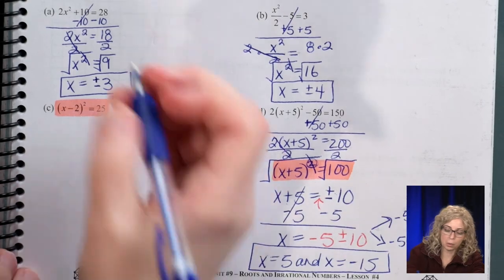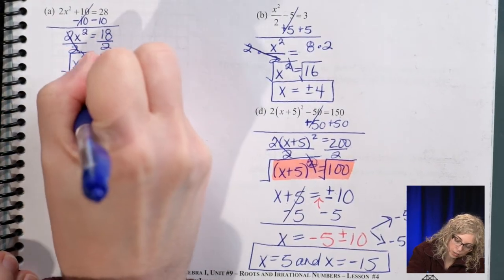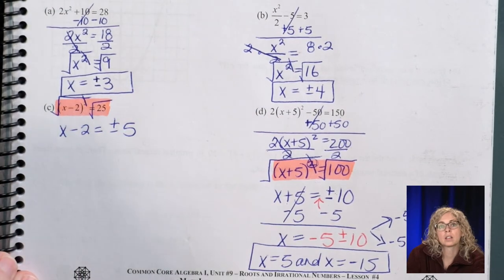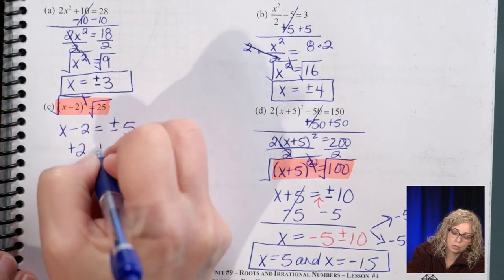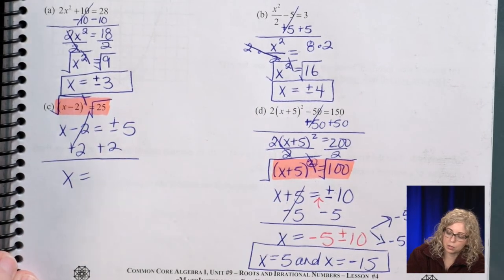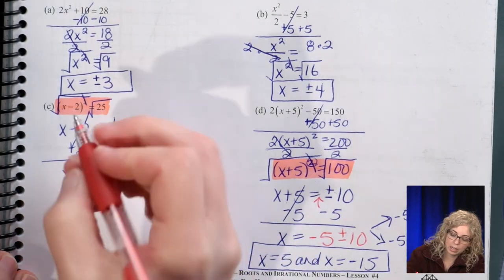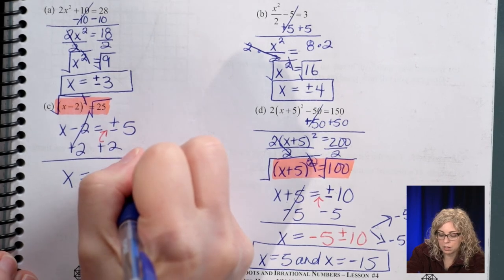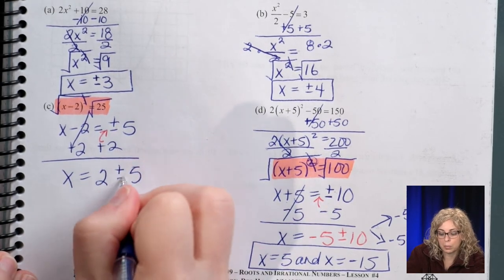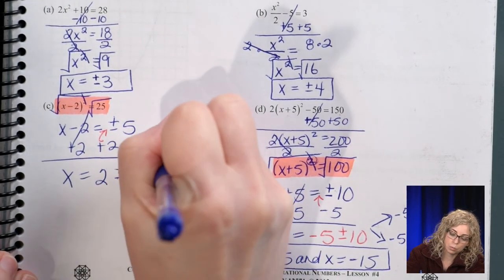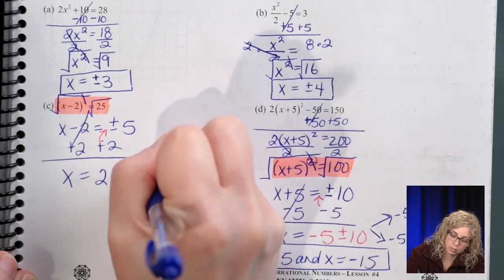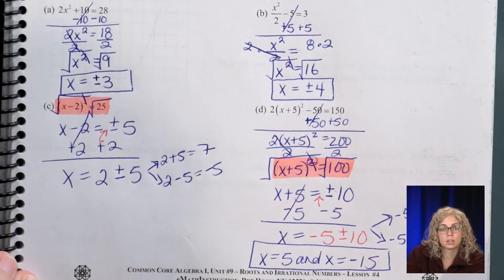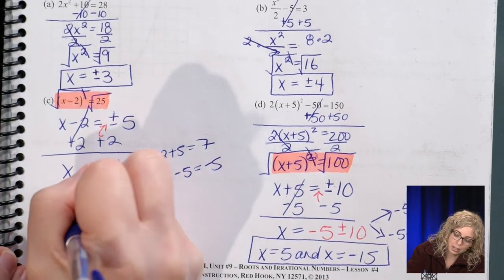For part c: we're at the same stage — take the square root first. We get x−2 equals ±5. Then add 2 to both sides: x equals 2±5. Taking the positive case: 2+5=7. Taking the negative case: 2−5=−3. So the solutions are x=7 and x=−3.